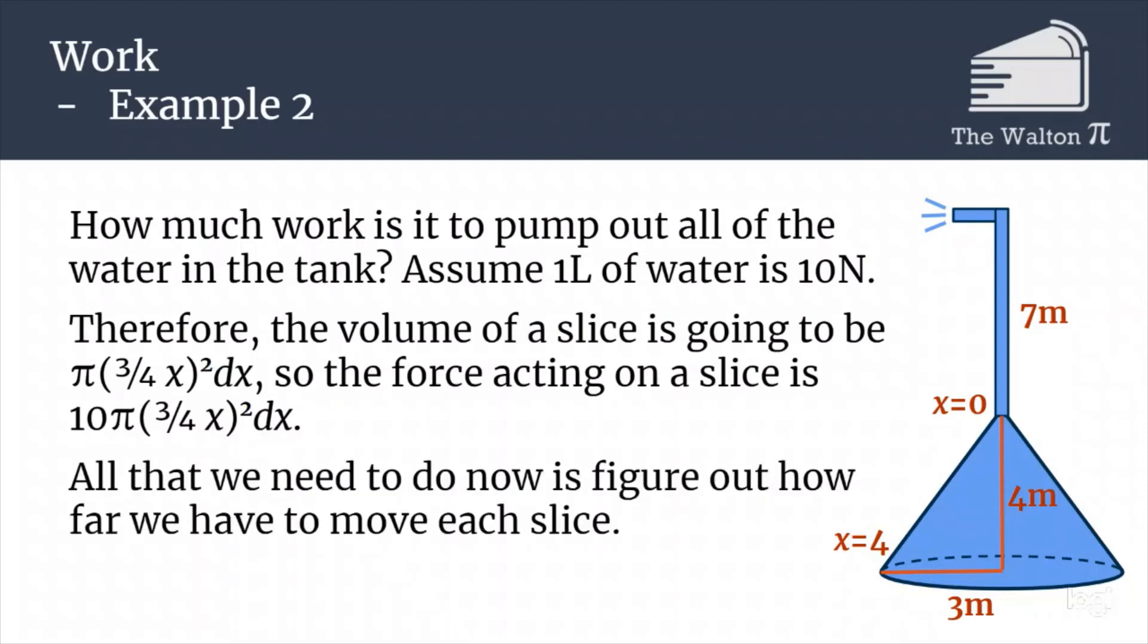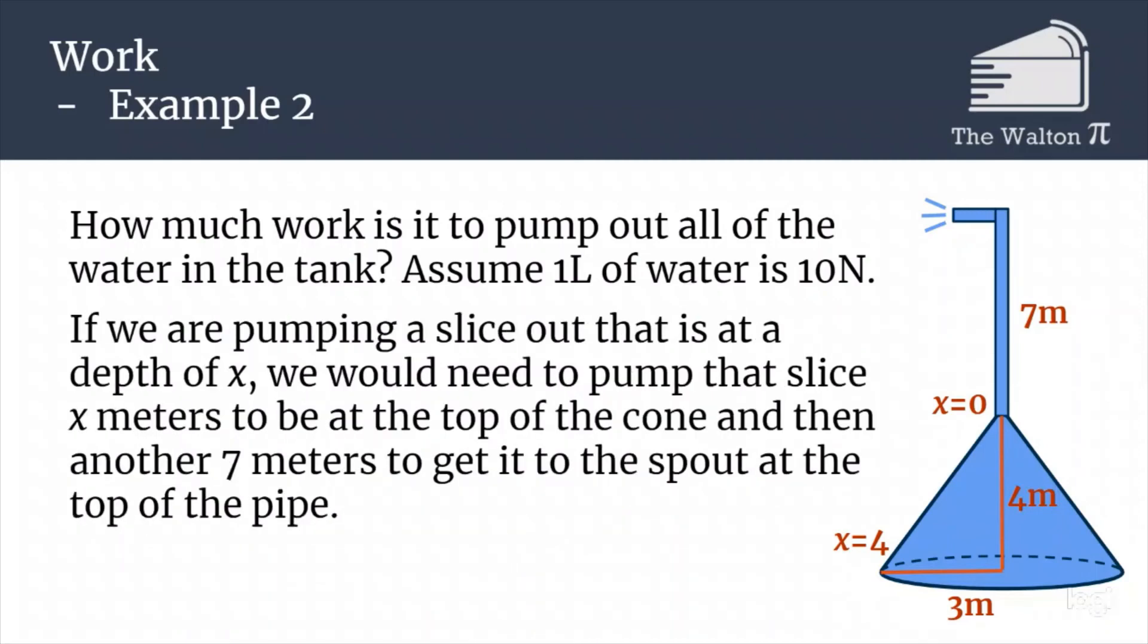Now we have to figure out how far do we have to move each slice. If we're pumping a slice out that is x meters below the top of the cone, we first have to pump x meters to the top of the cone, and then 7 more meters to get outside the tank. That means we are going to have to pump it 7 plus x meters: 7 meters for the top pipe and then x meters from inside the cone.